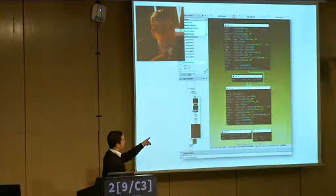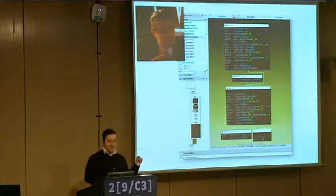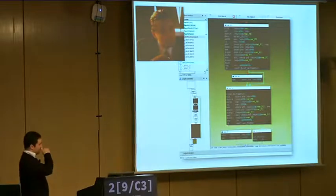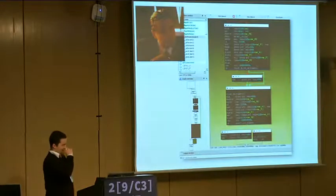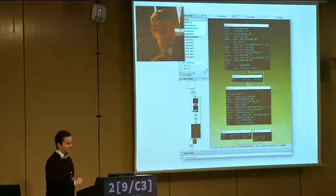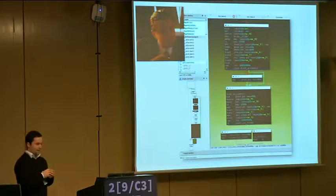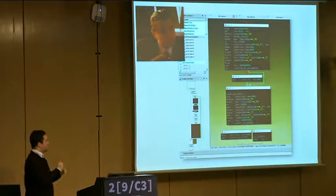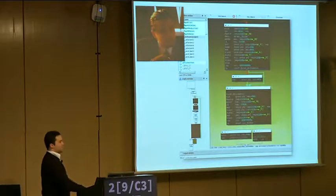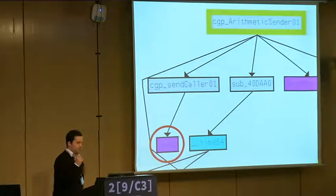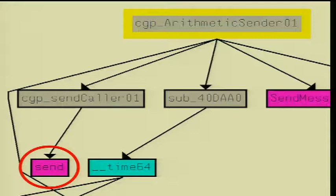If you know a little bit of assembly and you see this stuff, you realize it's up to no good — because there are a lot of really funky assembly instructions. You realize this is doing some kind of encryption or hashing because it's playing with the bytes. You have to find those points that look like they're encrypting or hashing something.